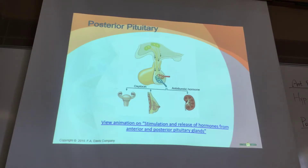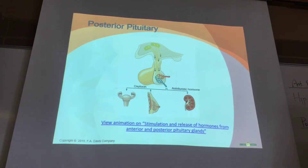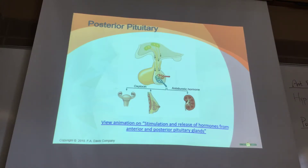The two hormones stored in the posterior pituitary are oxytocin and antidiuretic hormone (ADH). Oxytocin stimulates contractions and is a positive feedback example. ADH works specifically on the kidneys, making them reduce urine volume by withholding water—basically regulating your hydration level.